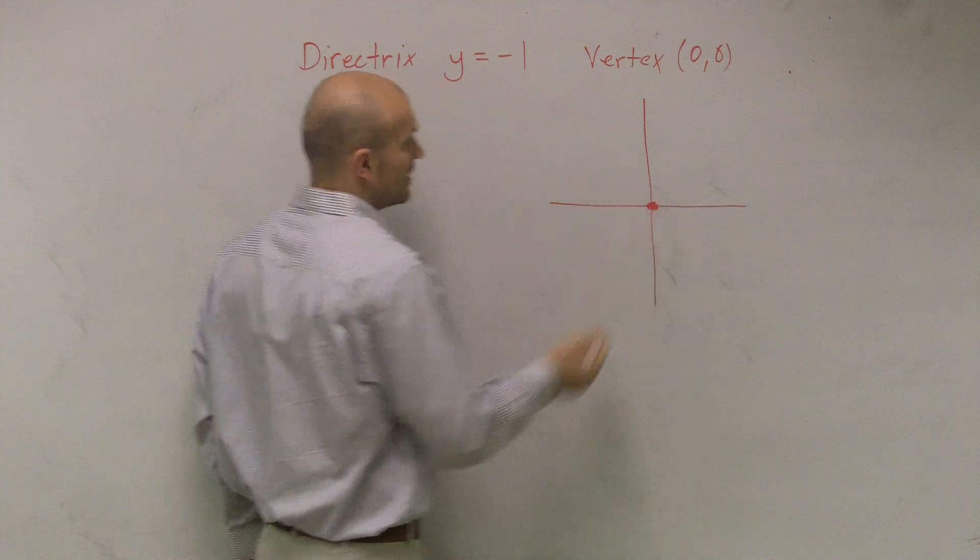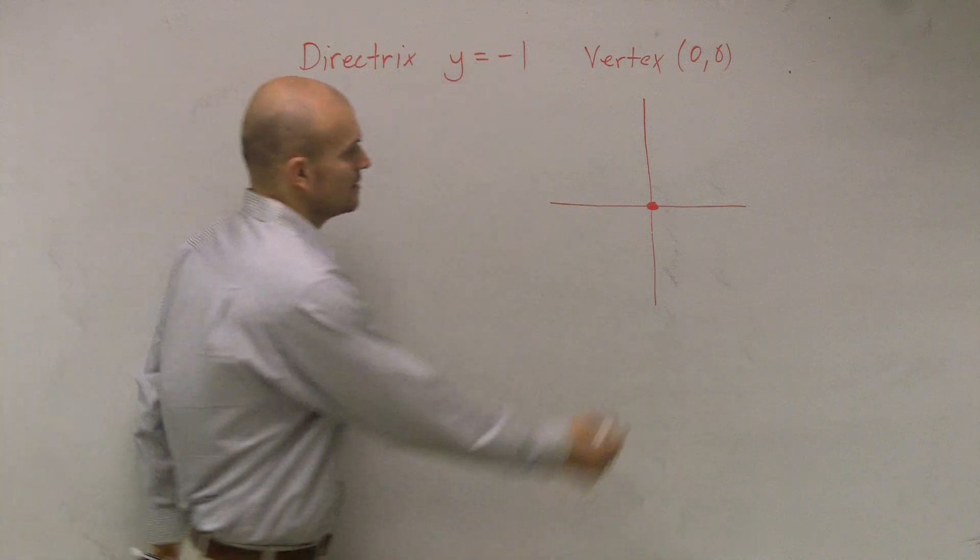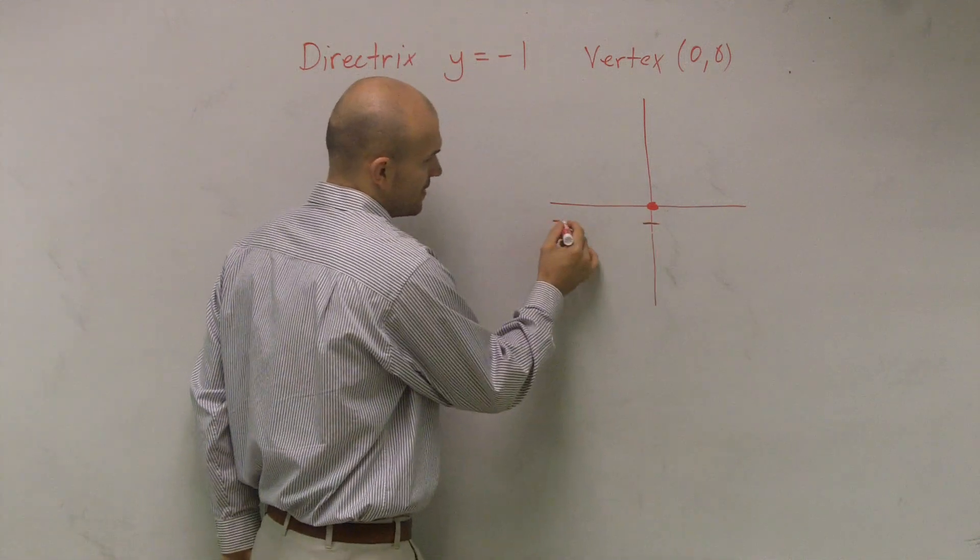We have a vertex, right? And it can either open up, down, left, right. But it says the directrix, y equals negative 1. So I go down to negative 1.